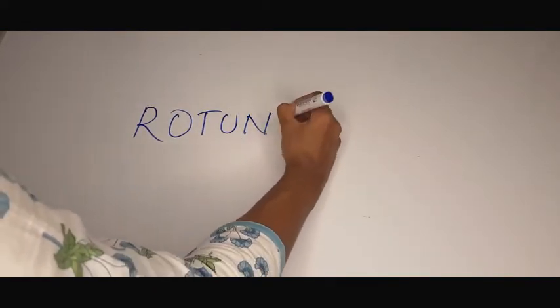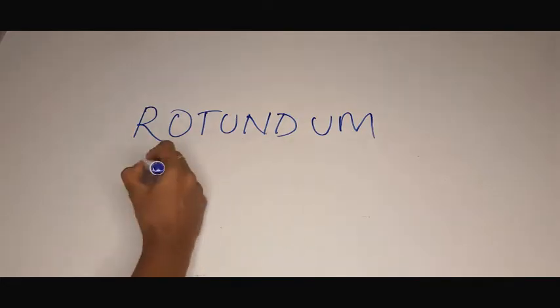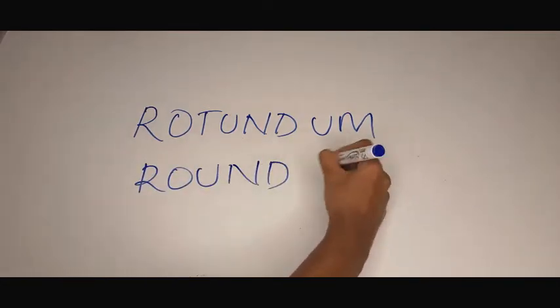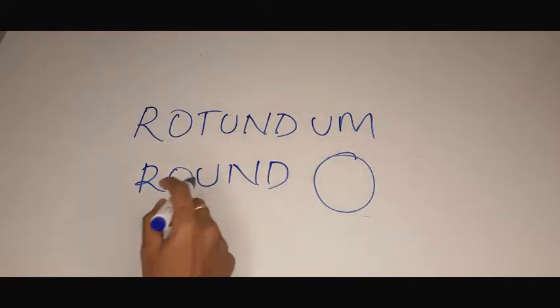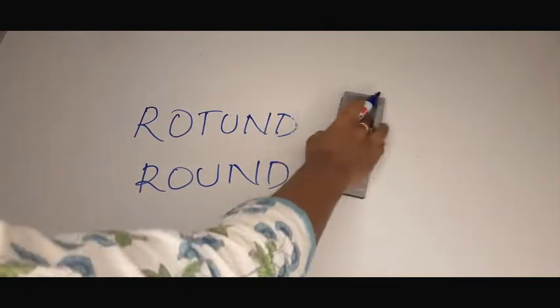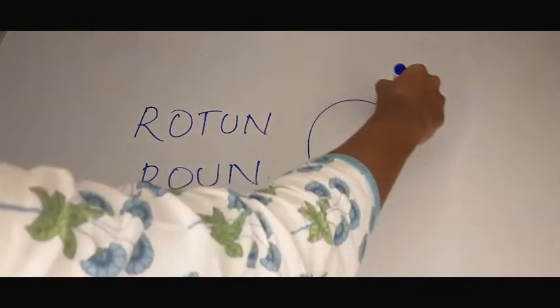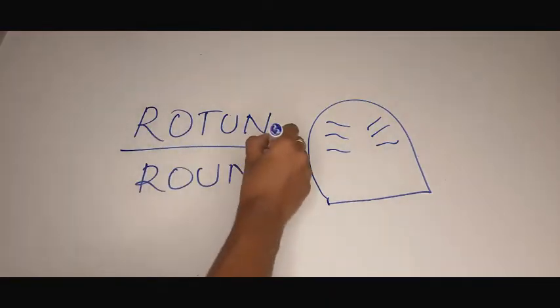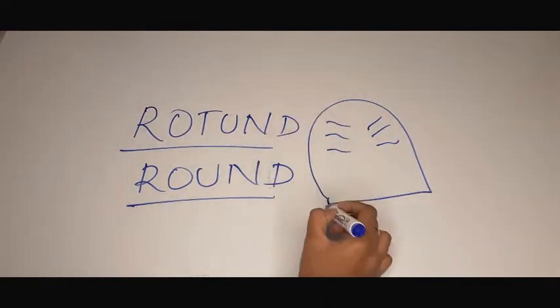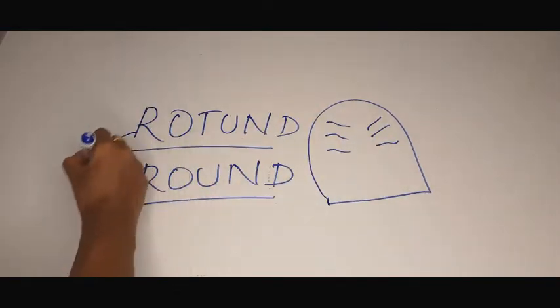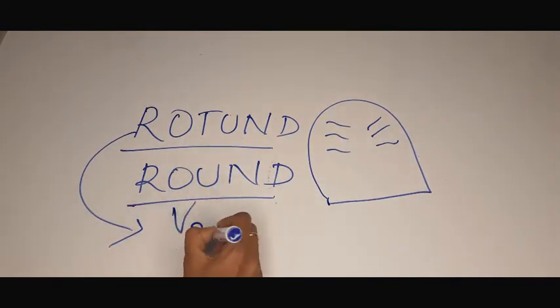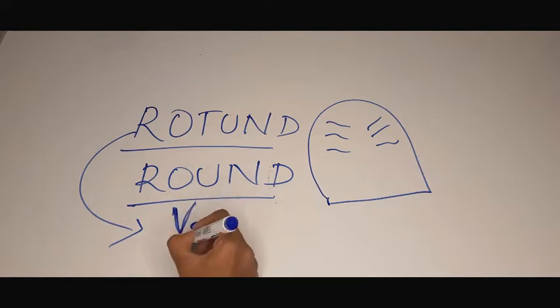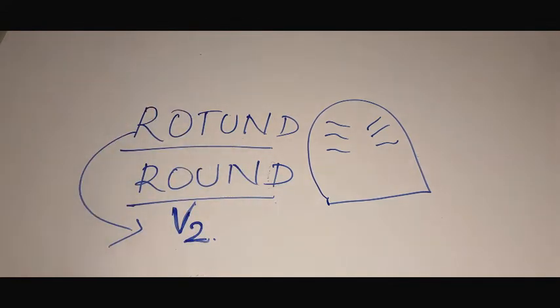How do you remember foramen rotundum? Rotundum means round. But let's draw a maxilla now. How does a maxilla look like? Maxilla is semi-round. So this will help you remember that rotundum is round and maxilla is semi-round. And rotundum, foramen rotundum has the V2, the 5-2. That is, maxillary division of the trigeminal nerve.